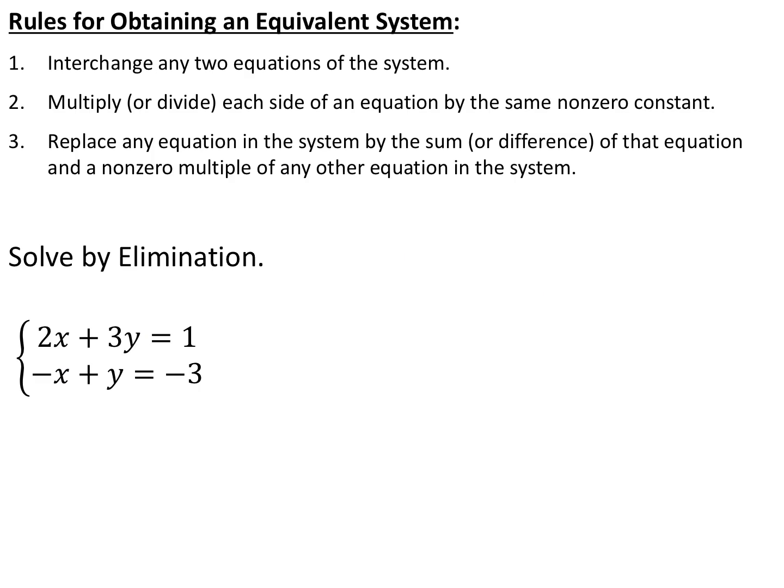The other algebraic method for solving a system of equations is elimination. For elimination, we have three rules. First, you can interchange any two equations — basically just rewrite them in a different order. Second, you can multiply or divide each side of an equation by a non-zero constant — multiply or divide, not add or subtract. Third, you can replace any equation in the system by the sum or difference of that equation and a non-zero multiple of another equation.